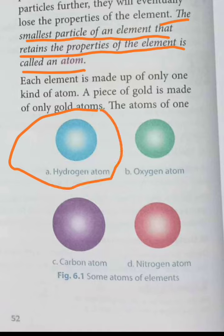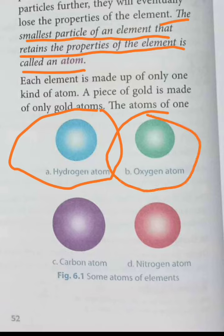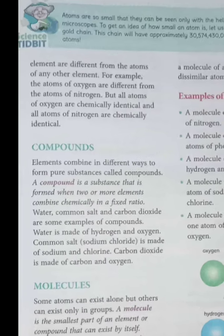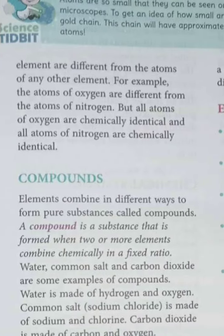So the atom of hydrogen is a hydrogen atom, the atom of carbon is a carbon atom, and the atom of nitrogen is a nitrogen atom. The atoms of different elements are different in size. The atoms of one element are different from the atoms of another element.